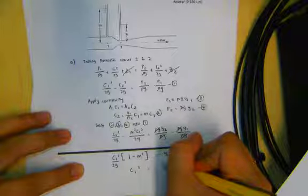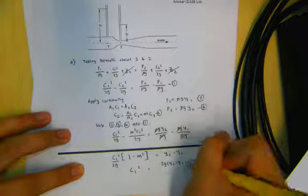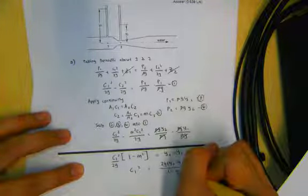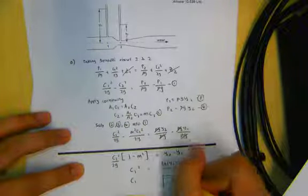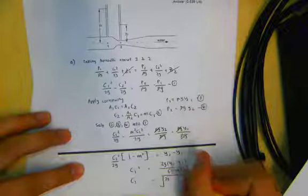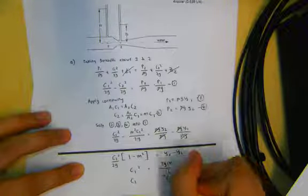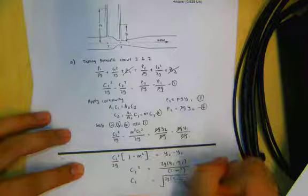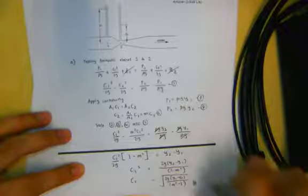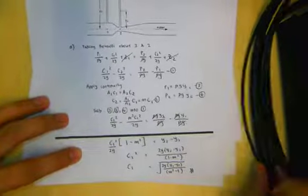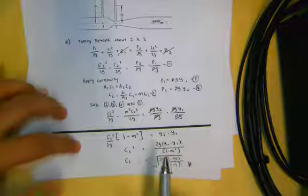Shifting remaining terms to the right hand side, C1 squared equals 2G(Y2 minus Y1) over (1 minus M squared). Bringing the square over gives the square root. We can also switch the position of Y1, Y2 and M, 1 by factorizing out the negative sign — negative and negative cancel — so it becomes the square root of 2G(Y1 minus Y2) over (M squared minus 1). This is how we show the expression for part A.